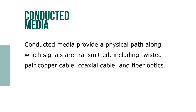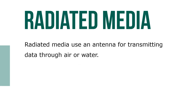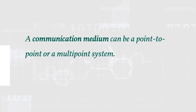Conducted media provide a physical path along which signals are transmitted, including twisted pair copper cable, coaxial cable, and fiber optics. Radiated media uses an antenna for transmitting data through the air or water. Communication medium can be a point-to-point or a multi-point system.